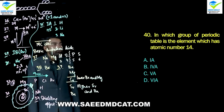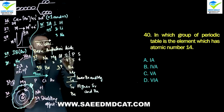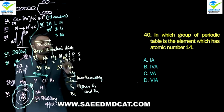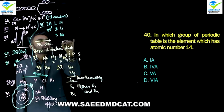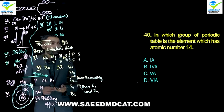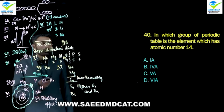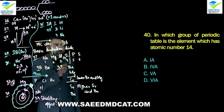Question 40: In which group of the periodic table is the element with atomic number 14? Atomic number 14 is silicon. Silicon's group number is 4A. Beta option: group 4A.